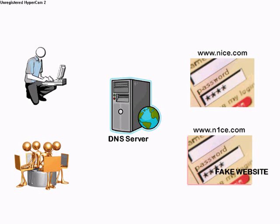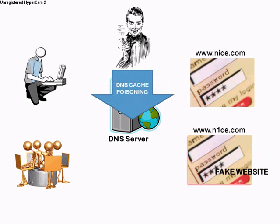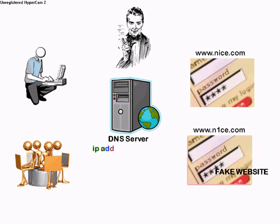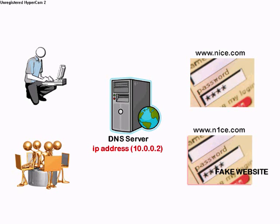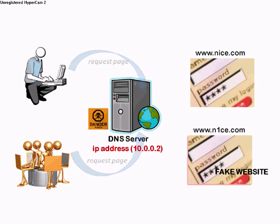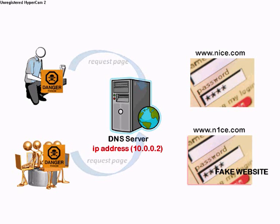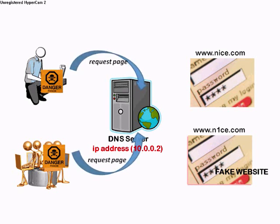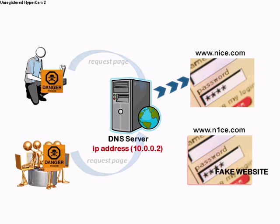Using various techniques, the attackers will change the IP address of the legitimate website in the DNS server to an IP address that will bring the user to a fake or bogus website. When a user wants to go to www.nice.com and types the address in the web browser, the user's computer queries the DNS server for the IP address of www.nice.com. Since the DNS server has already been poisoned by the attacker, it returns the IP address of the fake website. The user's computer is tricked into thinking the poisoned reply is the correct IP address, and instead of going to the original website, the user is fooled into visiting the fake website controlled by the attacker.